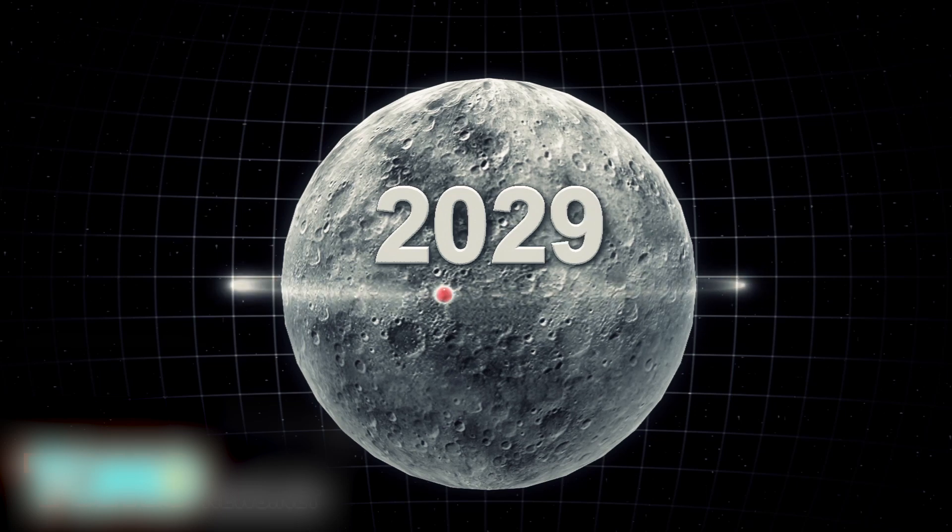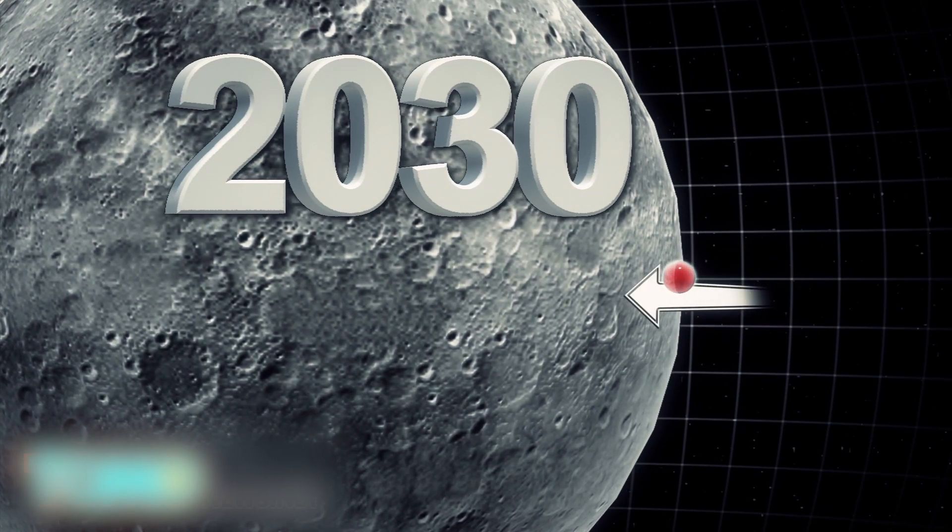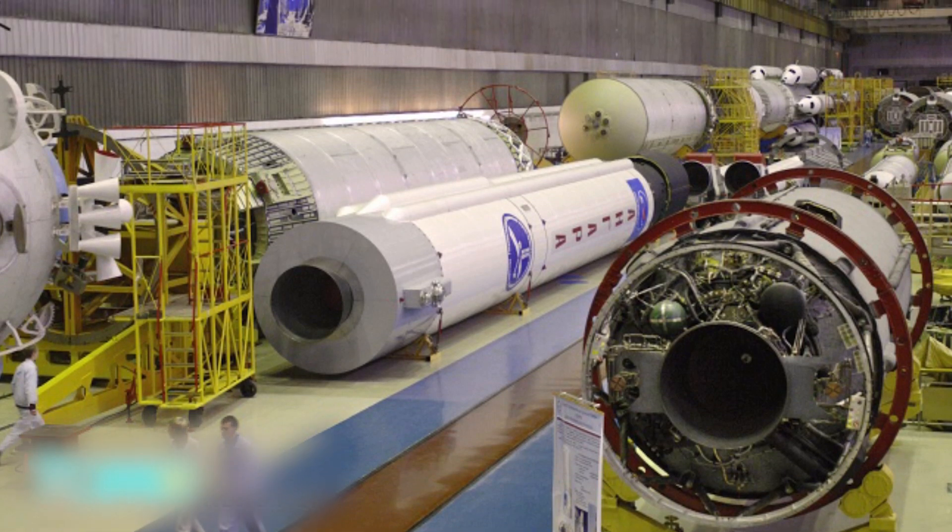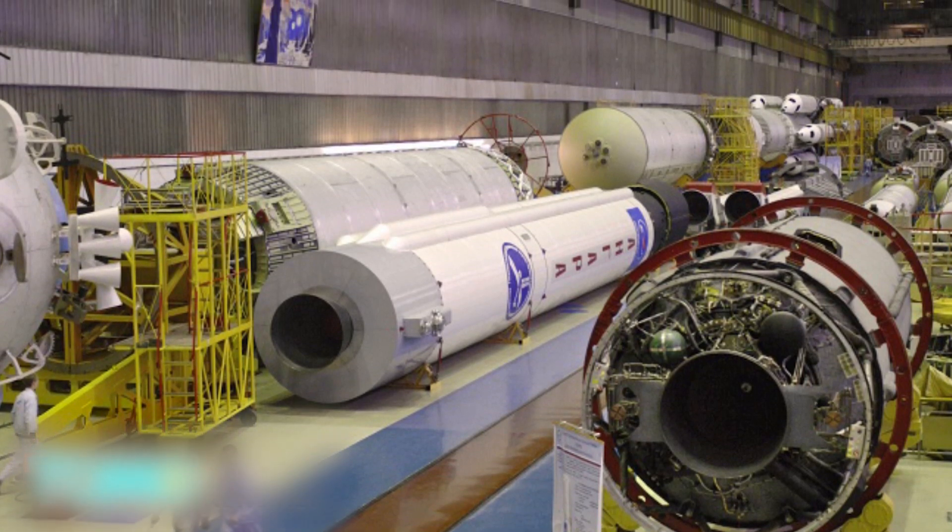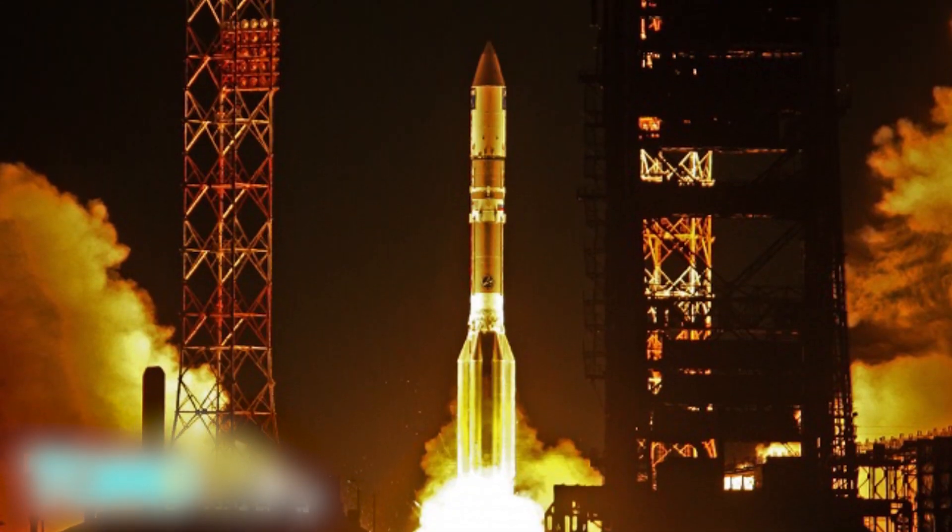Manned missions will begin orbiting the moon in 2028 and in 2030, humans are expected to finally land on the moon and establish a permanent moon base there. The first stage of the mission will cost around $185 million, with the two other stages costing even more. However, questions remain regarding how Russia will pay for the mission.